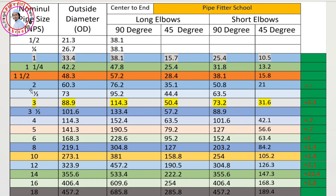The NPS size designations go: 1/2, 2, 2-1/2, 3, 3-1/2, 5, 6. The outside dimension refers to the outer diameter of the pipe.